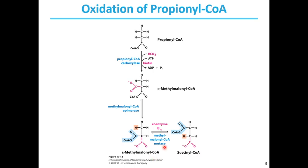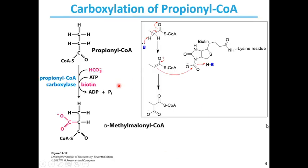The product of the rearrangement reaction is succinyl-CoA. The mechanism of propionyl-CoA carboxylase is shown here. This enzyme has a cofactor, biotin, which is attached to a lysine residue in the active site by a carboxyl group. The biotin group has a carboxylate attached to it. A base in the active site deprotonates the acidic carbon in propionyl-CoA, enolization happens, and electrons are pushed in to abstract the carboxyl from biotin, resulting in D-methylmalonyl-CoA.